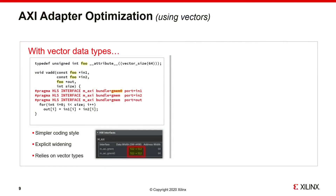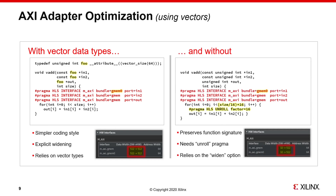Alternatively, note that we could also use the new vector data types introduced in Vitis HLS 2020.2 to explicitly control the widening of the ports and kernels. This variant would also be applicable to the Vitis HLS IP Vivado flow. On this slide, you can see side by side the differences in coding style between using vector data types versus relying on the widening option of Vitis HLS. The vector data type gives you a simpler coding style with explicit widening, but you have to rely on that special data type. Without vector data types, one advantage is that the function signature is the same, which is good for the Vitis flow since it means you don't have to change the host code. Still, you may need to use the unroll pragma and rely on the bit width widening option.